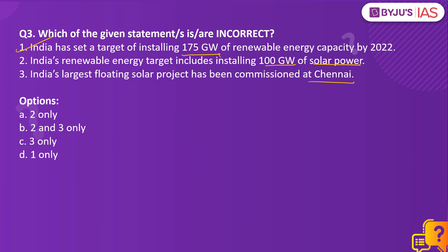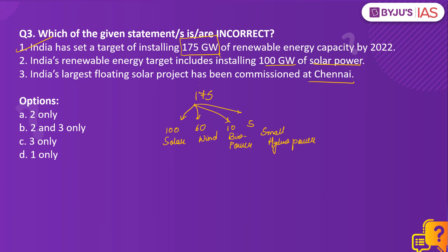Statement 1 is correct: India has set an ambitious target of 175 gigawatts of renewable energy to be installed by 2022, achieved from various sources — 100 gigawatts of solar power, 60 gigawatts from wind energy, 10 gigawatts from biopower, and 5 gigawatts from small hydropower. Statement 2 is also correct: India's renewable energy target for solar power is 100 gigawatts by 2022. However, Statement 3 is incorrect: India's largest floating solar project has been commissioned at Visakhapatnam, not Chennai. Since the question asks for the incorrect statement, the right answer is Option C, Statement 3 only.